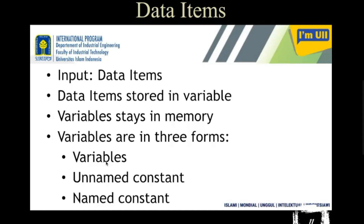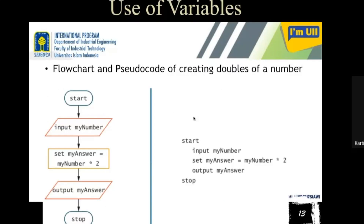These variables — whichever you need for storing the data items — are actually of three types. In three forms they are available: normal variables, unnamed constants, and named constants.